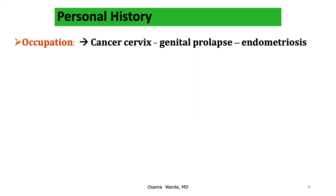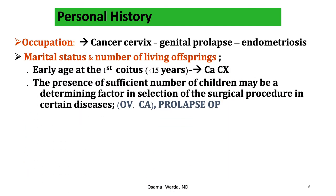Endometriosis may be linked to some environmental toxins, such as women working in painting factories. Marital status and number of living offspring is an important item in personal history, because early sexual intercourse — less than 15 years of age — may predispose to cervical cancer due to infection of the transformation zone exposed to viral oncogenes or sperm oncogenes.